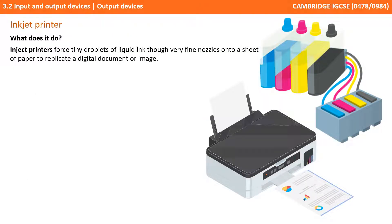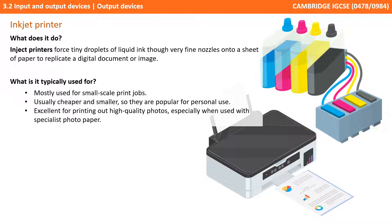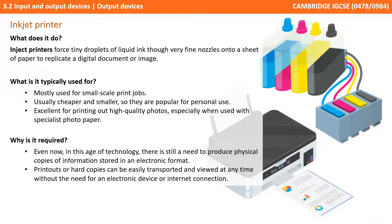Next up is the first of two printer technologies you need to know about: the inkjet printer. Inkjets force tiny droplets of liquid ink through very fine nozzles onto a sheet of paper to replicate a digital document or image. They're most commonly used for small scale print jobs, and they're usually cheaper and smaller, so they're very popular for personal and home use. They are excellent for printing high quality photos, especially when used with specialist photo paper. Even now in this age of technology, there's still a need to produce physical copies of information stored in electronic format, as printouts or hard copies can be easily transported and viewed at any time without the need for an electronic device or an active internet connection.